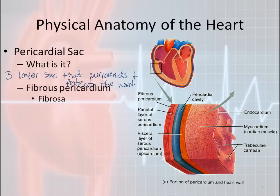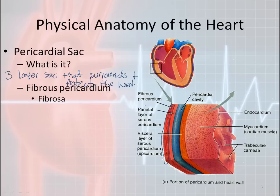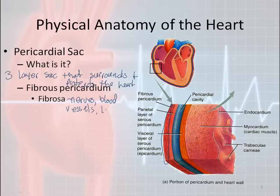There are two primary layers we're going to discuss: the fibrous pericardium and the serous pericardium. The fibrous pericardium is also called the fibrosa. The fibrosa is the outer layer of the heart — a very dense, inelastic sac that is loosely attached to the diaphragm, the sternum, and the great vessels. Interestingly, the fibrosa also contains nerves and blood vessels.